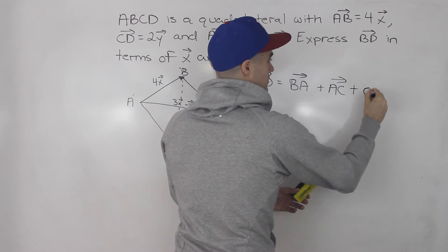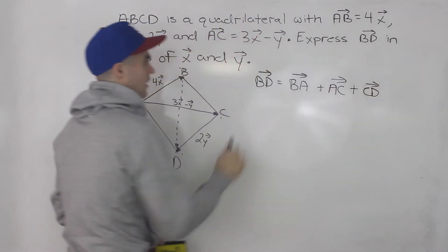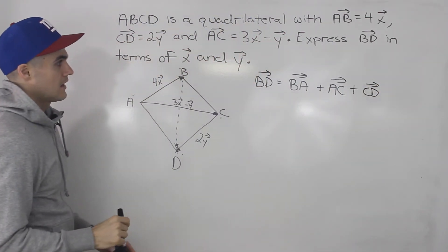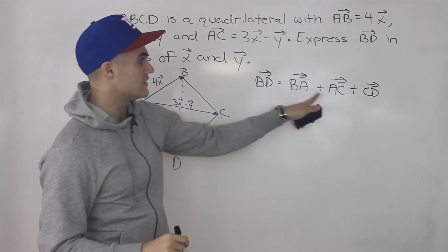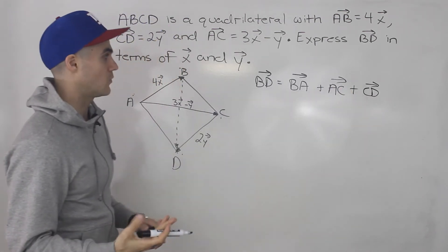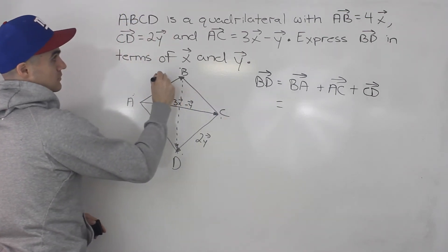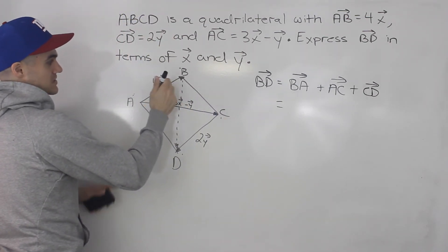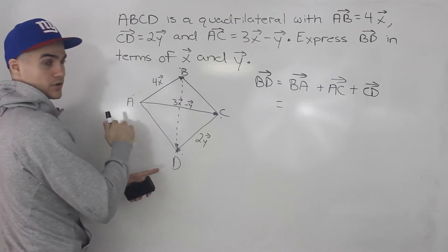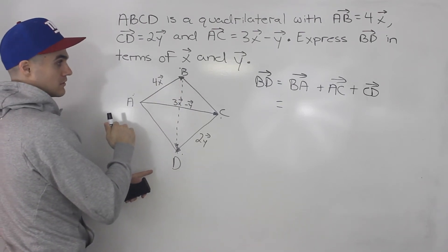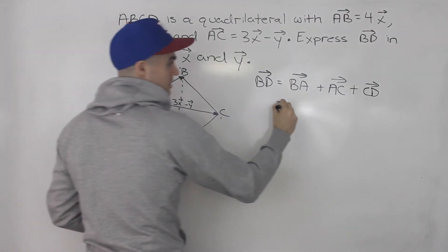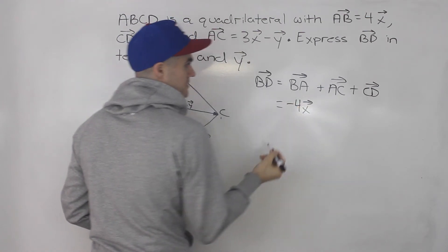And that would give us a resultant vector of BD. Now notice that all of these vectors we have in terms of X and Y. We know that vector AB equals 4 times vector X. That means BA is going to go the opposite direction, so that's just going to be negative 4 times vector X.